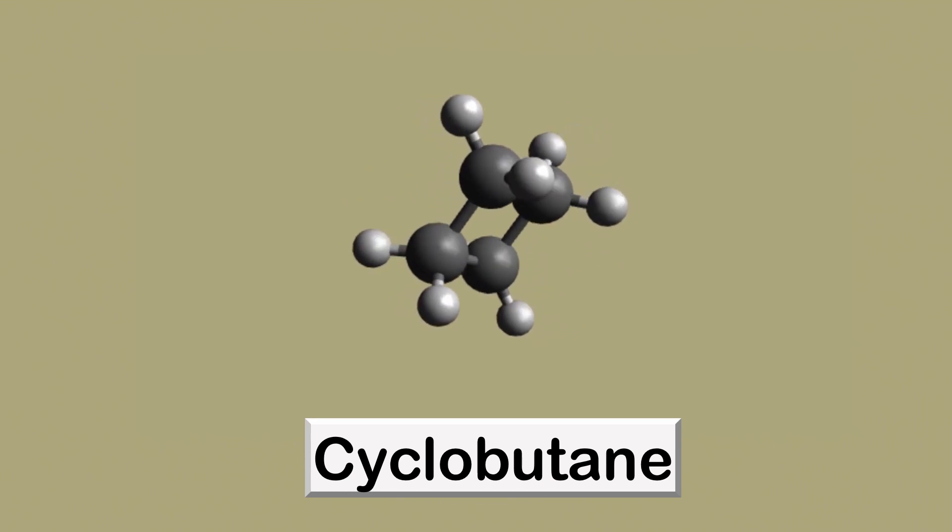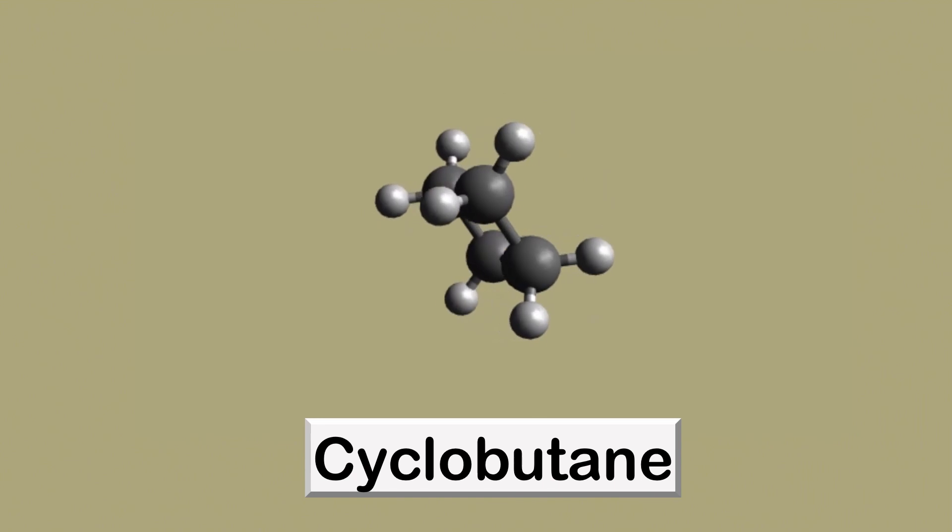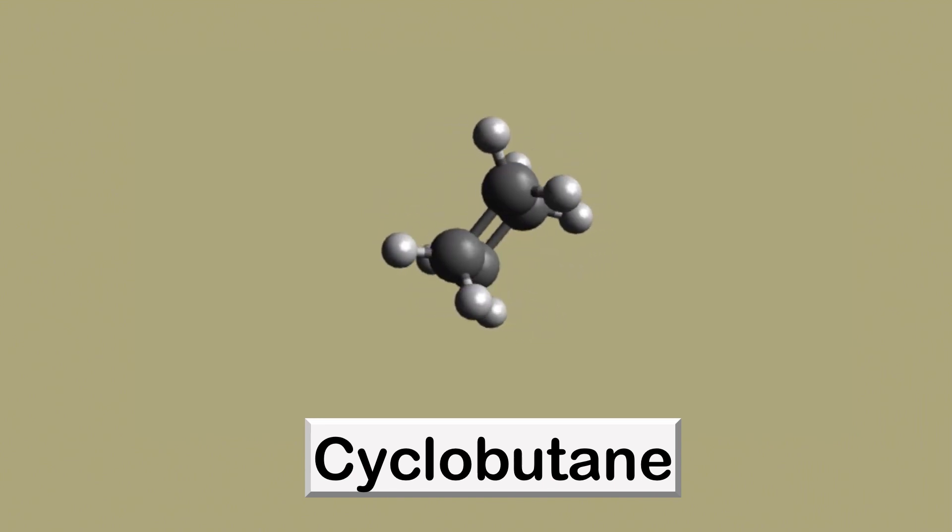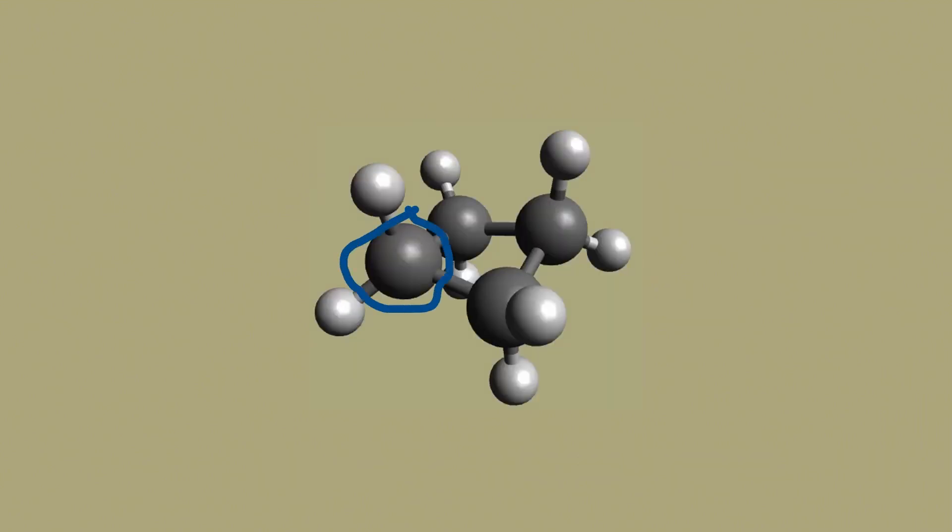The next in line is cyclobutane. Cyclobutane has four carbon atoms, three of which are in the same plane. This here is the expected geometry of cyclobutane. In actuality, however, the bond angle is less than 90 degrees. One of the four carbon atoms is actually out of the plane by 25 degrees. The molecule is said to be puckered. By doing so, it kind of relieves some of the torsional strain.